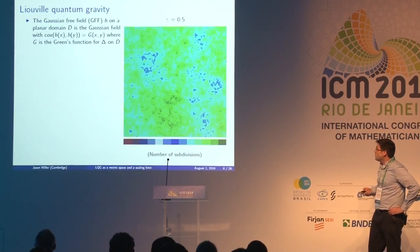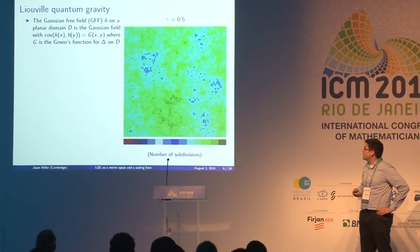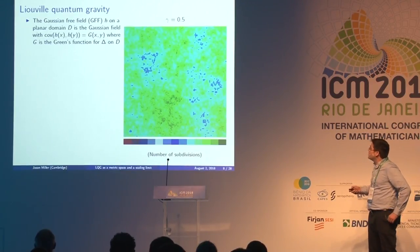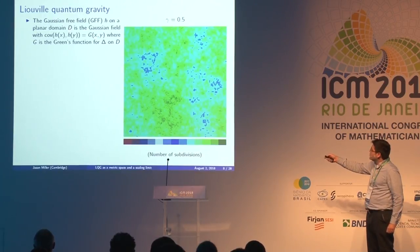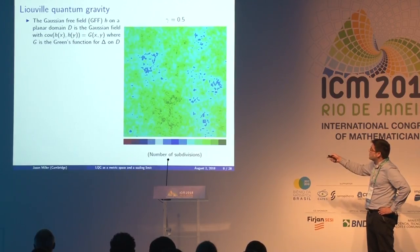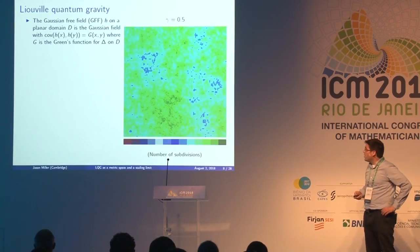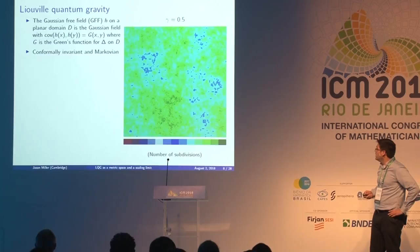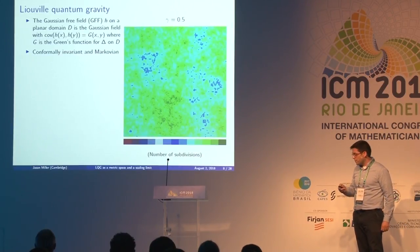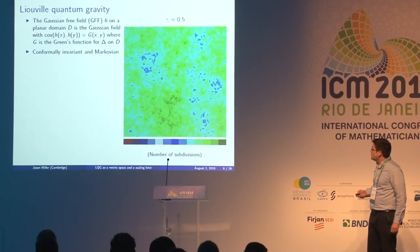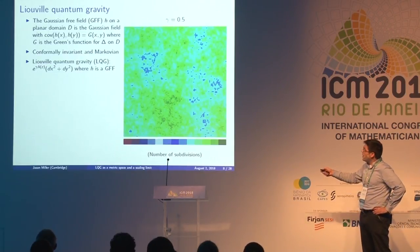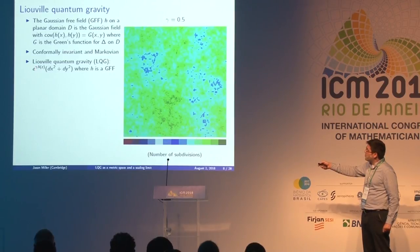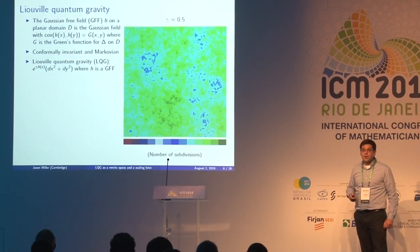In Liouville quantum gravity, the conformal factor comes from the Gaussian free field. The Gaussian free field is a random Gaussian field indexed by points on a planar domain, with covariance given by the Green's function for the Laplacian. It is both conformally invariant and Markovian. Liouville quantum gravity is then the random surface with conformal factor given by e to the gamma times H, where H is an instance of the Gaussian free field and gamma is a parameter controlling roughness.